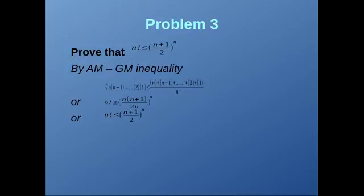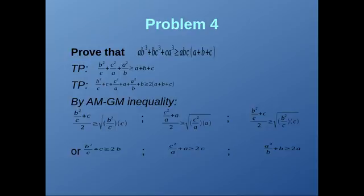Now let's look at a slightly more difficult problem using the AM-GM inequality. We have to prove that ab³ + bc³ + ca³ ≥ abc(a + b + c). This is the same as proving — dividing both sides by abc — that b²/c + c²/a + a²/b ≥ a + b + c. Proving this is enough to prove the original statement.